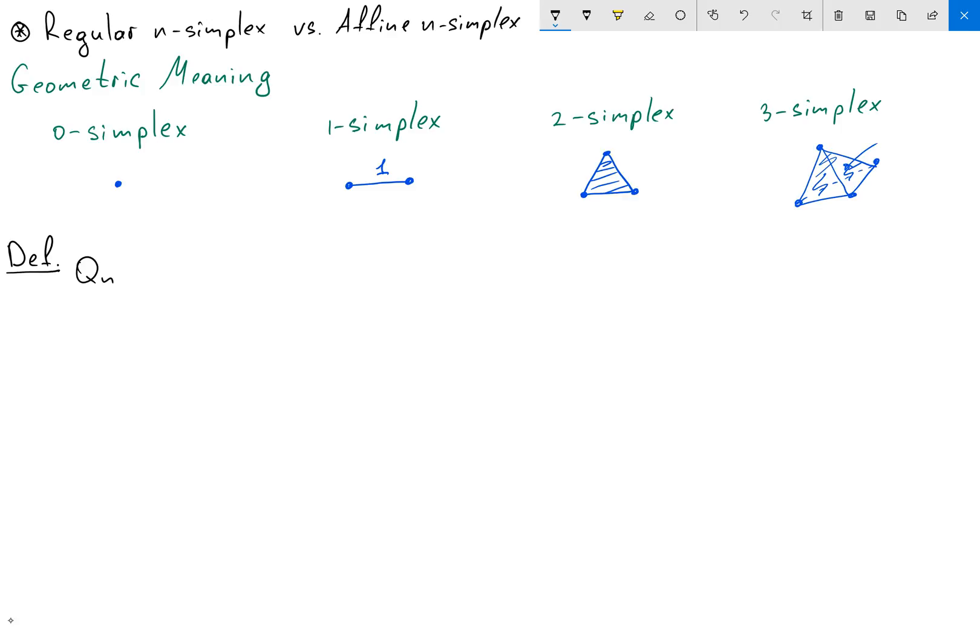So we're saying that Qn is a regular n-simplex if it's a set of points in Rn, such that xi and xn belongs to Rn. And what we know for these points, we know that we have the following inequality, that x1 plus dot dot dot xn less or equal than 1, and each of our xi is bigger or equal than 0. And this is the definition of regular n-simplex.